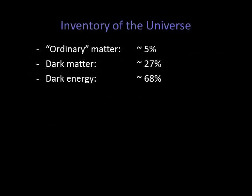It's a little crazy to think about, but the matter we're used to — the stuff all around us — makes up about 5% of all the matter in the universe. About 27% of the universe is in the form of dark matter, and about 68% is in the form of dark energy.